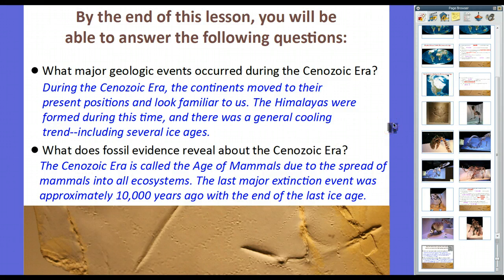And what does fossil evidence reveal about the Cenozoic Era? Well, the Cenozoic Era is called the Age of Mammals, due to the spread of mammals into all ecosystems. Essentially, dinosaurs, what happened there in the Mesozoic Era, mammals have done this. The last major extinction event was approximately 10,000 years ago, with the end of the last ice age, and the reasons are up for debate, including the impact that humans have on it.